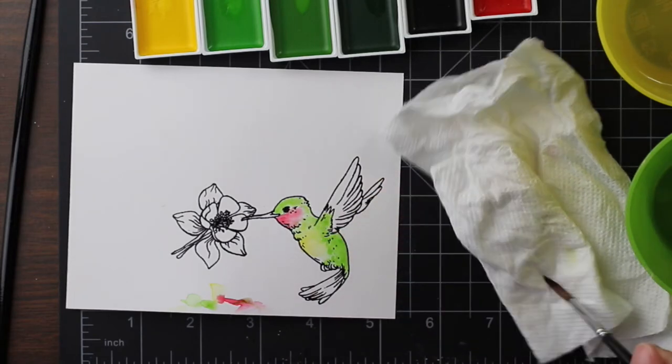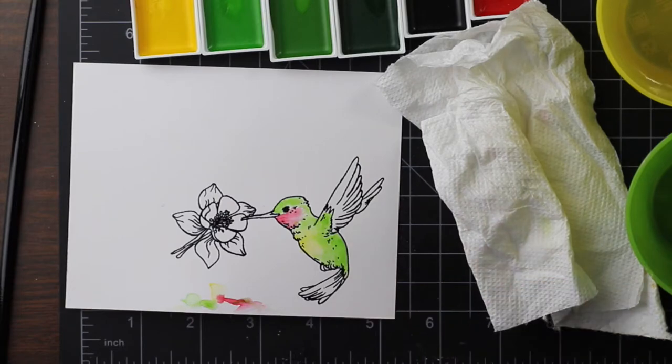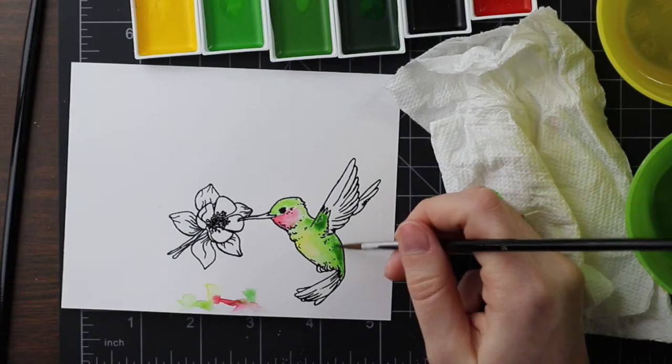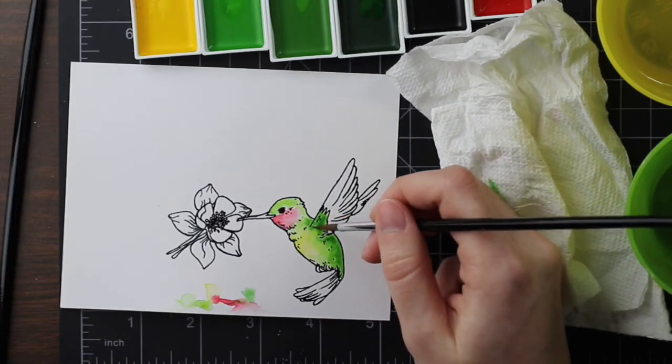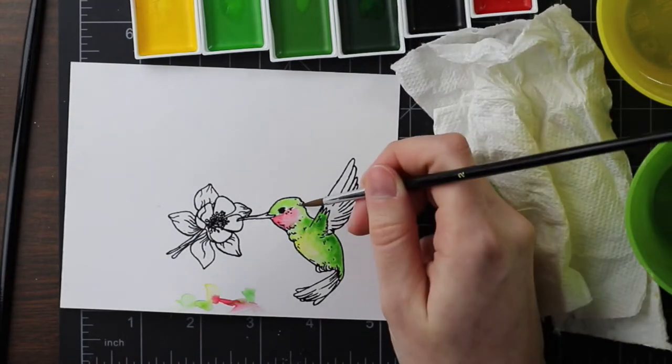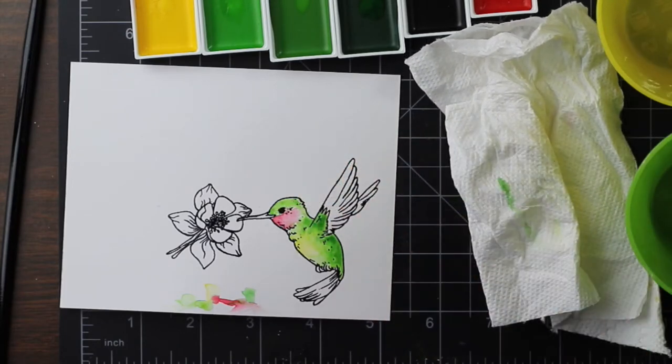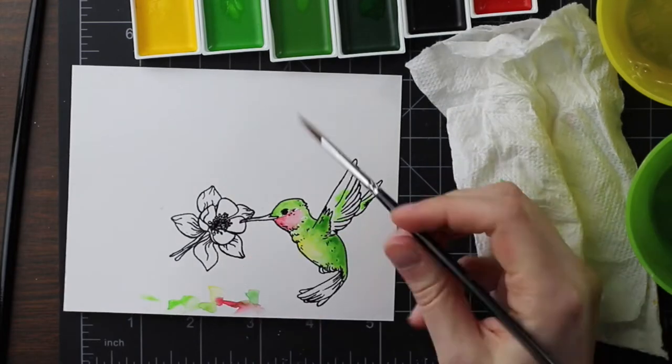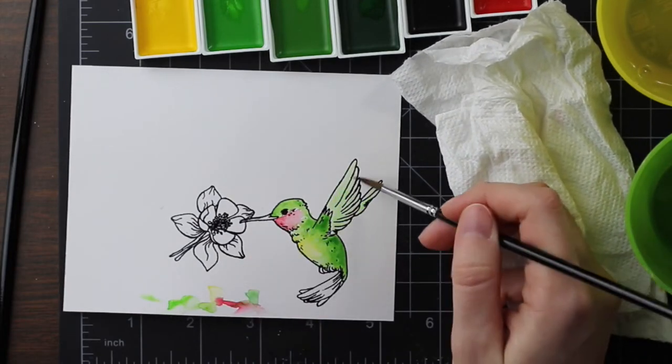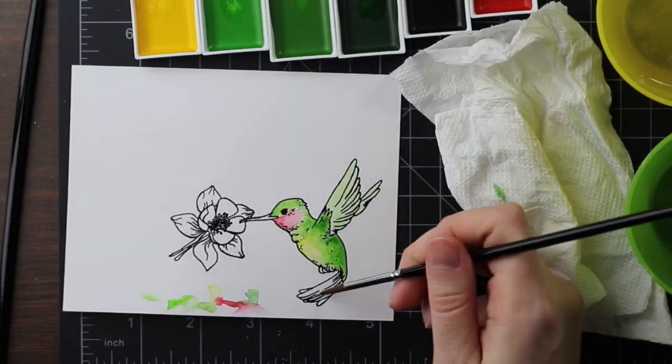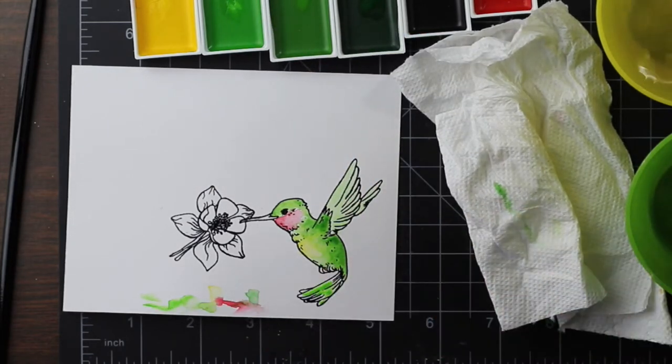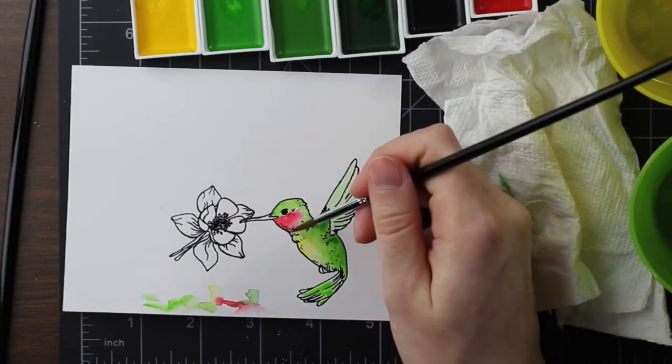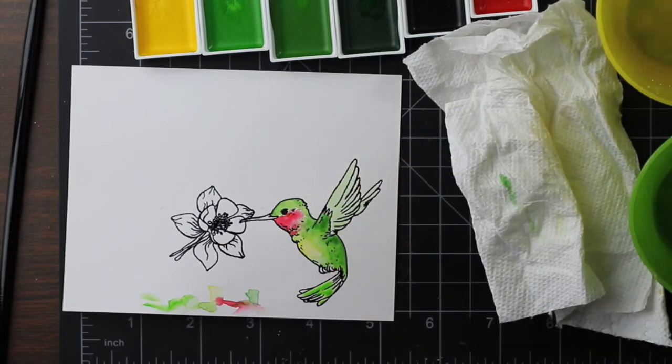So first, whenever I watercolor something, I like to add a very light kind of wash of water down, just not a whole lot of water, just a little bit so that when I start adding my watercolors into it, it isn't really stark on the cardstock. It kind of starts blending already because there's a little bit of water there. So I added some water and then I added the lightest green, a very light wash over the entire hummingbird.